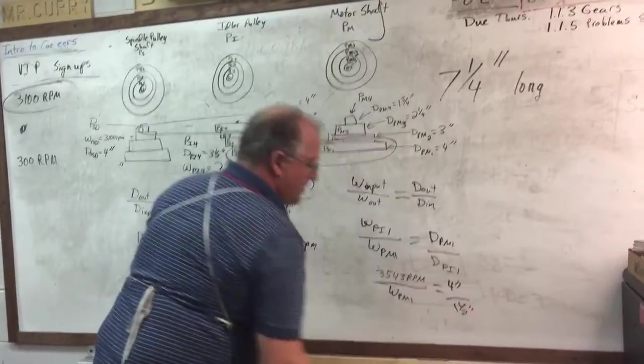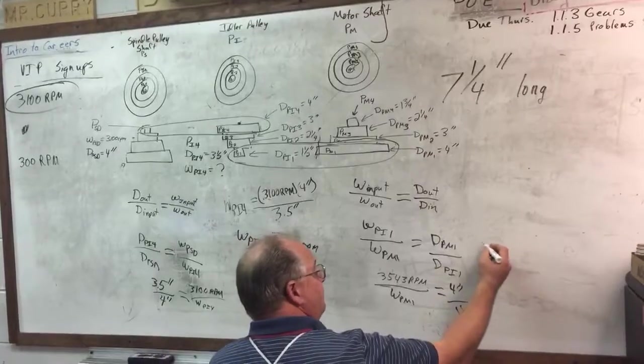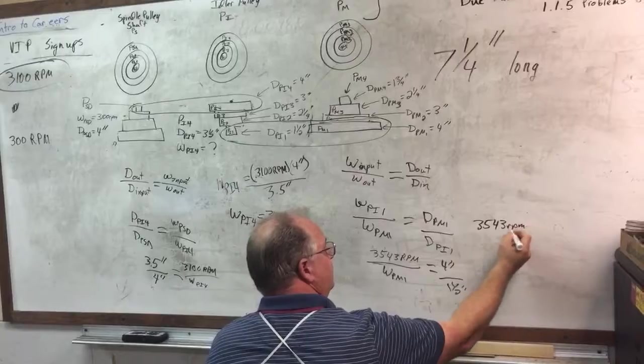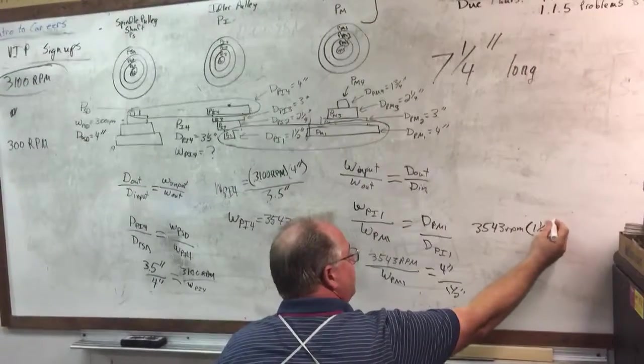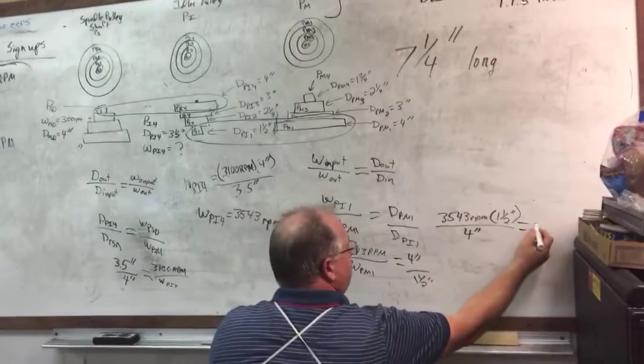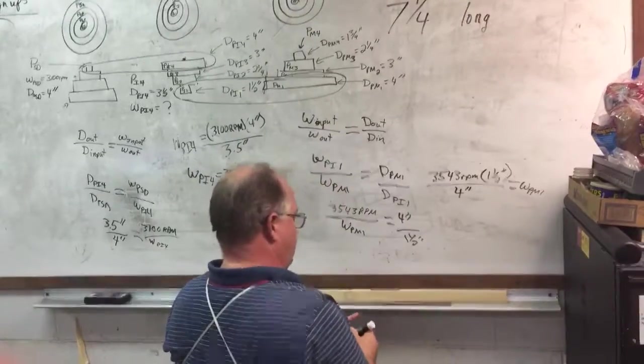So now all I need to do is do my cross multiplication. We find out that 3,543 RPM times 1 and 1/2 inches divided by 4 inches is going to give me my WPM1. That's my motor speed.